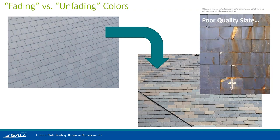What you want to keep an eye out for is slate that starts to develop a rusted appearance over time, because this is indicative of ferrous deposits in the slate that are starting to oxidize with exposure to the elements, which is then resulting in slate breakage.